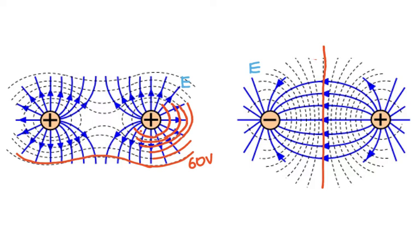For two different charges, the closest equipotential line to the negative charge will be the largest negative number — maybe negative 100 volts — then negative 90, and so on. Closest to the positive charge it might be positive 100, then positive 90, positive 80, and so on. Between two opposite charges, you will reach a point of zero volts. Between two same charges, you get the peanut-shaped picture.